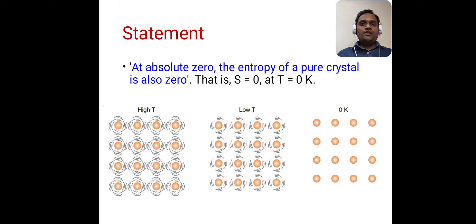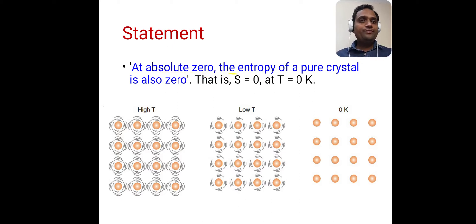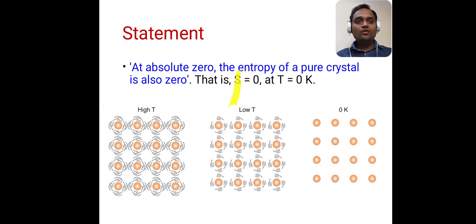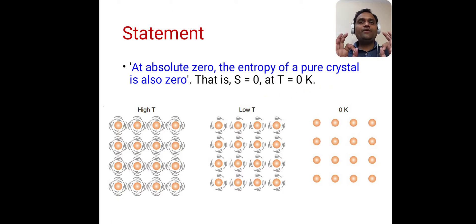Let us start with the statement of the third law of thermodynamics. The statement is: at absolute zero, the entropy of a pure crystal is also zero. That is, S is equal to zero. S is the notation used for entropy, so S = 0 at T = 0 Kelvin. This is a very important statement.